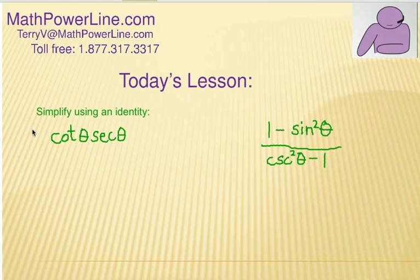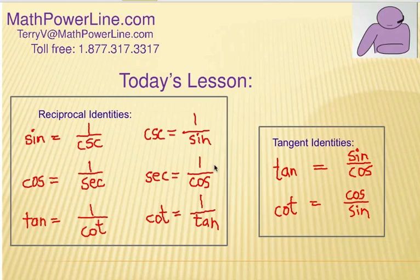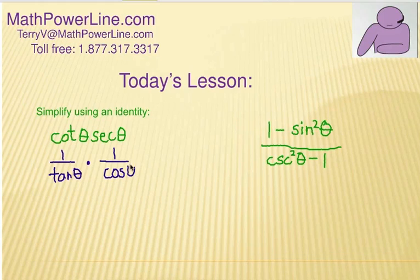We're going to show an example of how you can simplify these using an identity. I've got two problems for you here — go ahead and pause the video and try both of them. In this first one we have cotangent theta times secant theta, and we need to simplify that. I notice I've got two different functions here. Let's go ahead and use some reciprocal identities and see what happens. In my reciprocal identities collection, I have this one and this one, so we're going to rewrite the secant and the cotangent functions.